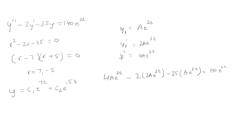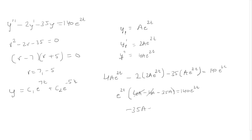Notice that all terms have e to the 2t, so we can factor that out and just look at the coefficients. We have 4a, minus 2 times 2a which is also 4a, then minus 35a, equaling 140. The two 4a terms cancel, leaving negative 35a.